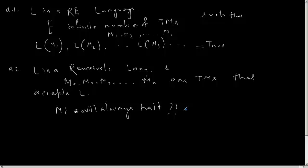The answer is true. Because the fact that it is a recursive language means — by definition — there exists a Turing machine that accepts all the words of the language and rejects the remaining words. For this language I have several Turing machines. I cannot say all of these Turing machines will halt, but out of all these Turing machines, if any one of them halts, then I can say L is recursive.